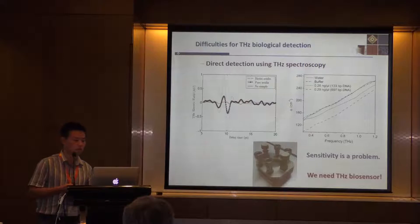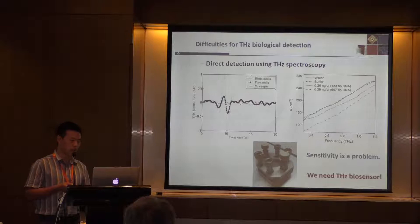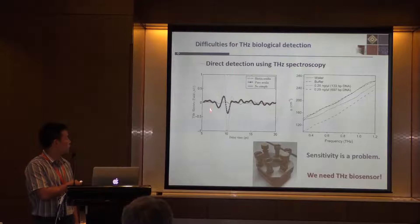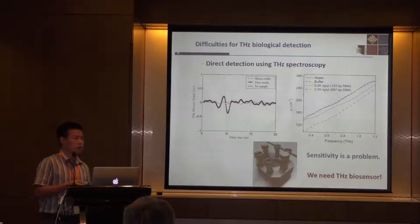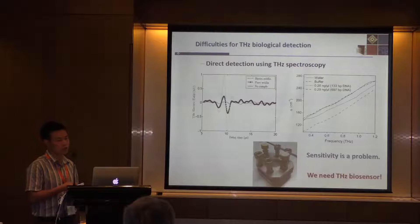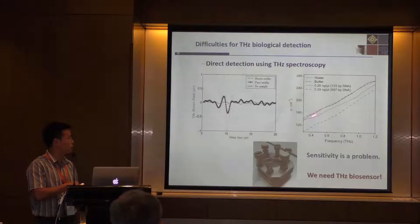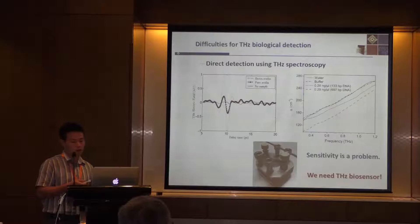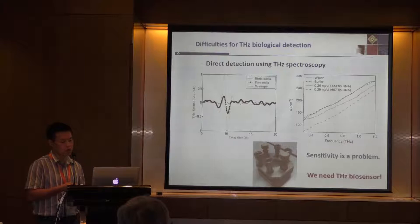If we use direct detection using terahertz spectroscopy, we can see the time-domain waveform is like this, and the spectrum is usually like this. So it's very difficult to find the absorption peaks, especially for liquid samples. It's hard to find the differences for small changes. So it's urgent to find a good terahertz biosensor, because sensitivity is a very big problem for direct detection.